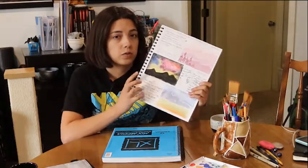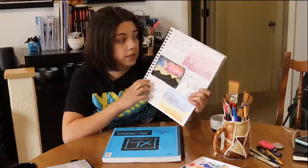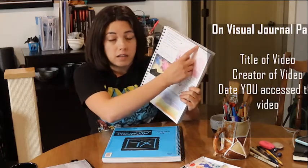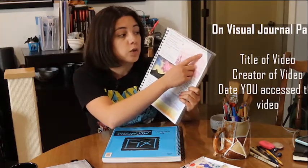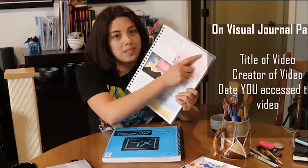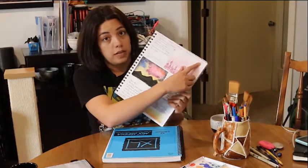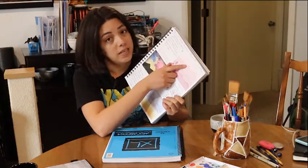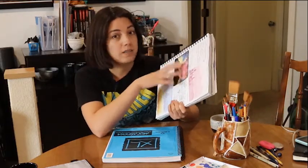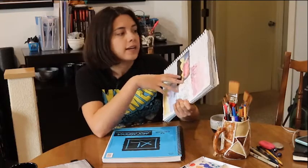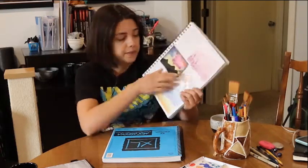So the key things that I want you to put on your visual journal pages is obviously the title of the video that you were viewing, who it's by, and you also need to put the date you viewed the video. So on this page, it says I viewed this video on July 20th. The reason why I want you to write down the date is because that way I can actually get an idea of when you viewed material.